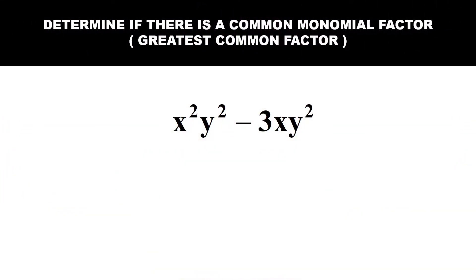Now, whenever you get a polynomial, for example, something like this equation, you need to determine if there is any common monomial factor, or we call it the greatest common factor. Well, if you look at this case, you will find that there is X and Y which we can factorize out.